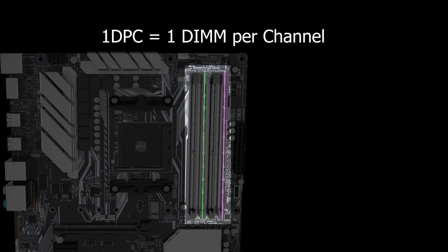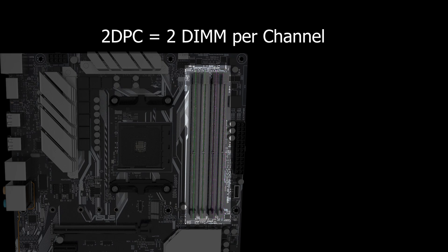1DPC essentially means one RAM stick or DIMM per channel. To achieve maximum frequency, it's typically best to have one stick per channel, while 2DPC means two sticks per channel.